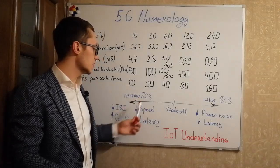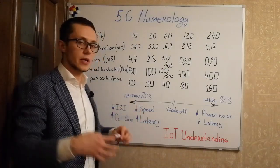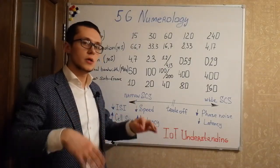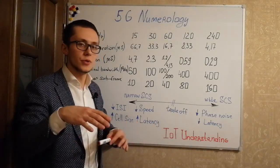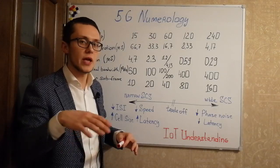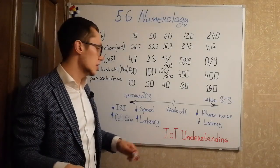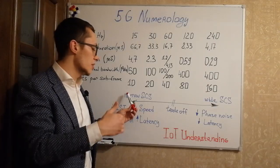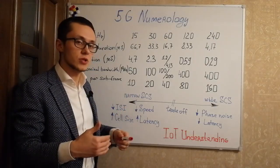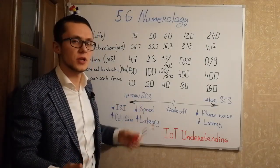With narrow subcarrier spacing we can have large cells to cover huge areas, rural areas for example, and we can implement applications such as Internet of Things.